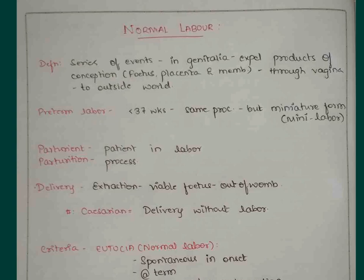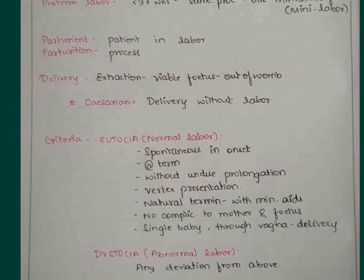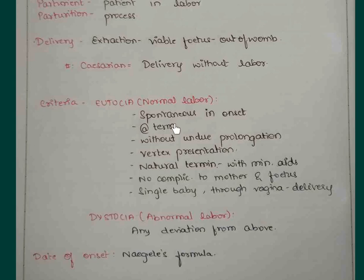Coming to the criteria of normal labor, also called eutopia. First thing is it will be spontaneous in onset. Second, it will be occurring at term, between 38 to 42 weeks. It will be taking place without undue prolongations. There will be vertex presentation or cephalic presentation, natural termination of pregnancy with minimal aids, no complications to mother or fetus. It will be a singleton pregnancy or single baby which will be having vaginal delivery with weight greater than or equal to 2.5 kg.